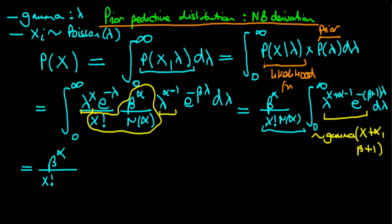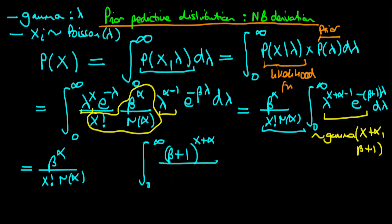Then we have the integral from 0 to infinity, and we're going to make this exactly a gamma density. The normalizing constant is beta prime to the power alpha prime — that is, beta plus 1 all to the power x plus alpha — divided through by the gamma function of x plus alpha. Then we've got the kernel: lambda to the power x plus alpha minus 1, times e to the power minus beta plus 1 times lambda, integrated with respect to lambda.